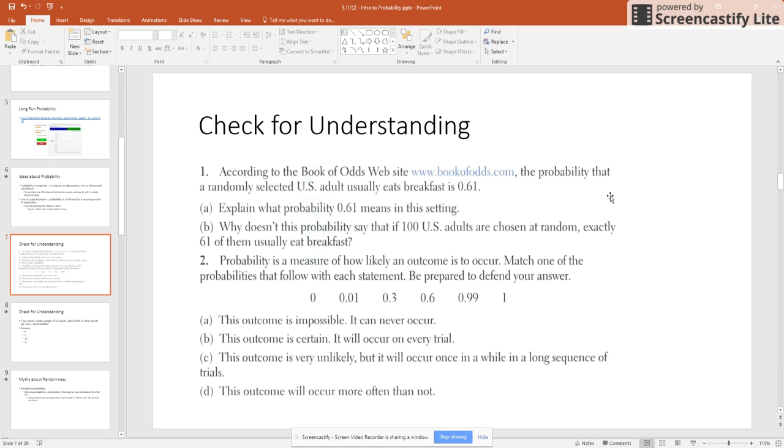So part B there, why doesn't this probability say that if 100 U.S. adults are chosen at random, exactly 61 of them usually eat breakfast? Well, 100 is not really that big of a sample.